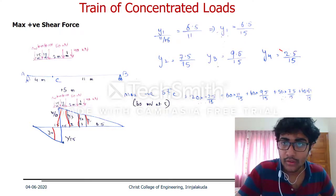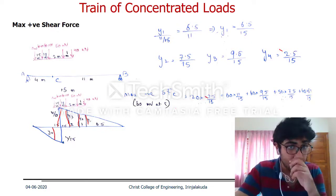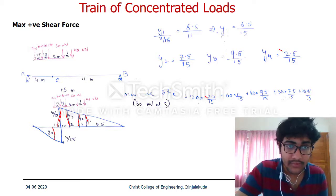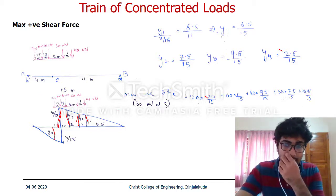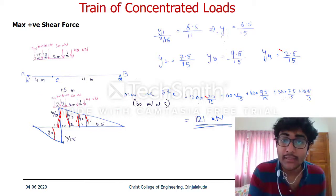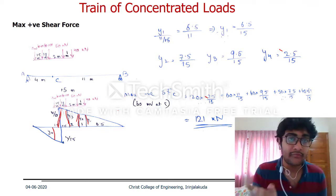That is: 120 times minus 2.5/15 plus 60 times 11/15 plus 60 times 9.5/15 plus 50 times 7.5/15 plus 40 times 6.5/15. We get the value as 121 kN. Surprisingly, it is greater than the previous case.